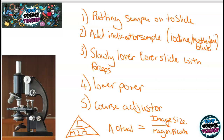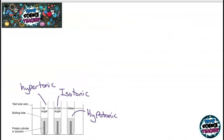The second biology required practical is the osmosis practical. You can observe osmosis by placing a potato chip inside three solutions. One is pure water, called the hypotonic solution. One is a half-concentration sugar or salt solution, called the isotonic solution. And the last is a hypotonic solution, which is a strong salt or sugar solution.